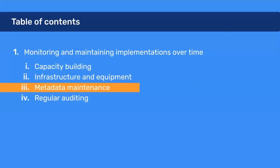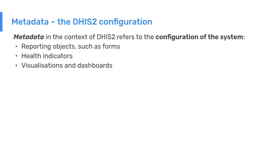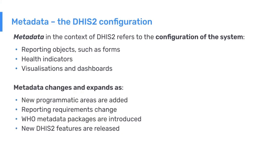We'll now look at metadata maintenance. Metadata in the context of DHIS2 refers essentially to how the system is configured. The metadata in DHIS2 includes the reporting objects such as data sets or reporting forms, the health indicators and the way they are configured, and the dashboards and visualizations that end users see. This metadata changes and expands over time.